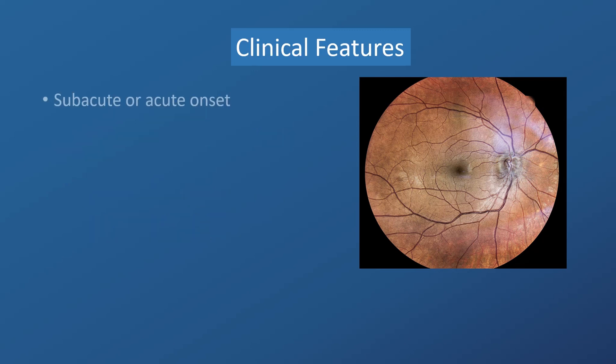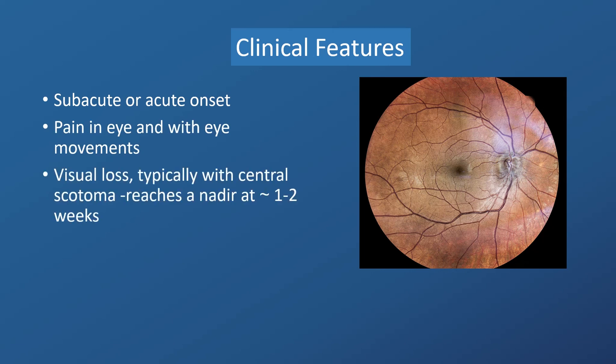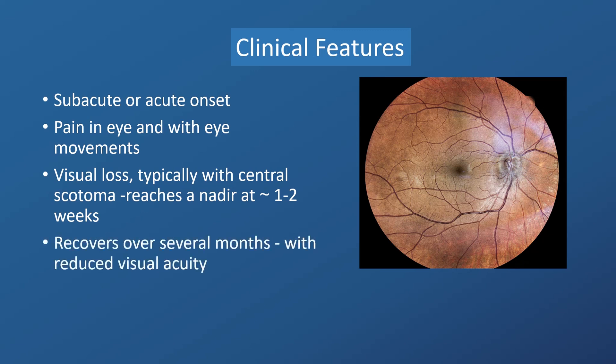Optic neuritis manifests as the subacute or acute onset of pain in the eye and pain with eye movements, and loss of vision, typically with central scotoma, that usually reaches a nadir at approximately 1 to 2 weeks. Optic neuritis recovers over several months with possible reduced visual acuity, but seldom severe.